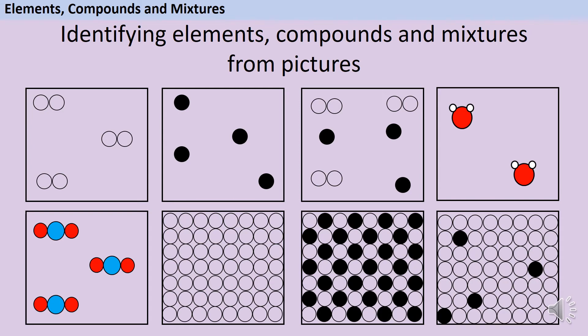To recap, if it's an element, then all of the atoms will be the same type. So you're expecting to see circles of the same size and the same colour. If it's a compound, there must be more than one type of element. So you're going to have circles that look different to each other. But they need to be touching to show that they're chemically combined or bonded.